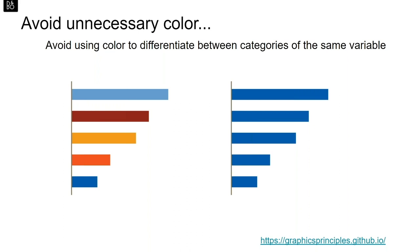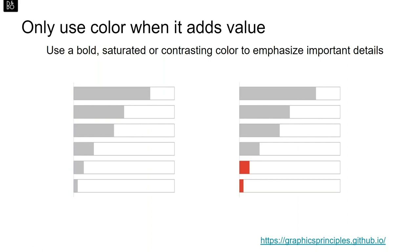Also try to avoid unnecessary colour. Avoid using colour to differentiate between categories of the same variable — this can introduce confusion, similar to the pizza example from YouGov. Introducing unnecessary colour also limits us when we really do need to use colour later on. Use colour when it adds value — use a bold, saturated, or contrasting colour to emphasise important details. In the left-hand plot, our eyes are naturally drawn to the top of the bar. In the right-hand plot, we introduce a contrasting colour and our eyes are now drawn to the bottom of the bars — an important design choice that allows us to highlight key information and important messaging.